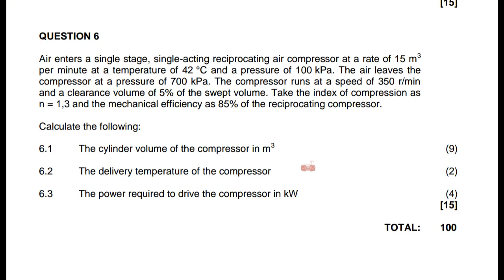The statement reads as follows: air enters a single stage, single acting reciprocating air compressor at a rate of 15 cubic meters per minute, at a temperature of 42 degrees Celsius and a pressure of 100 kilopascal. The air leaves the compressor at a pressure of 700 kilopascal. The compressor runs at a speed of 350 rpm, with a clearance volume of 5% of the swept volume. Take the index of compression n = 1.3 and the mechanical efficiency is 85%.